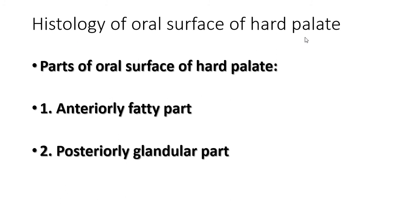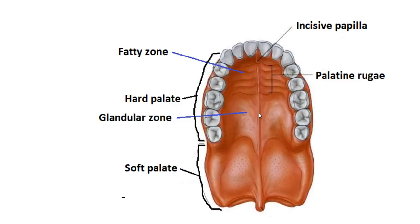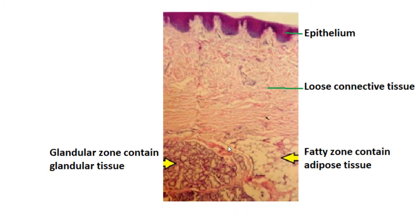The histology of the oral part of the hard palate is divided into two parts: the anterior fatty part and the posterior glandular part. This is the oral part of the hard palate — this portion is the fatty zone, this is the glandular zone, and this is the incisive papilla, which covers the incisive fossa.